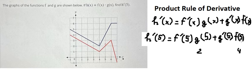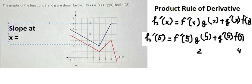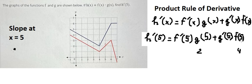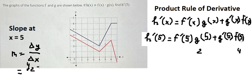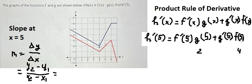Now f prime of 5 refers to the slope at x equals 5. If we look carefully, we can see this is about the slope of this line. To calculate the slope we use delta y over delta x — that means y2 minus y1 over x2 minus x1. So let's say we have the point here, that is about (4, 2), so x1 is 4 and y1 is 2.